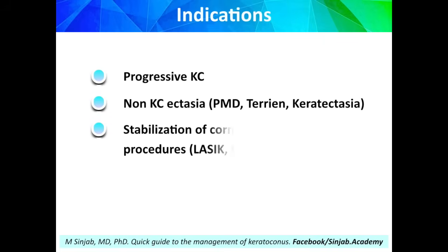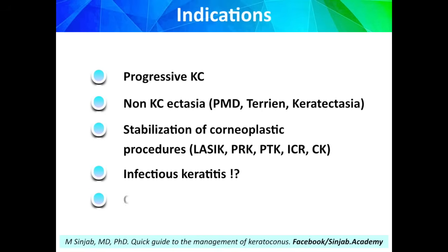Corneal crosslinking is indicated in progressive keratoconus, non-keratoconus ectasia, including pellucid marginal degeneration, Terrien's marginal degeneration, and other types of corneal ectasia. It is also indicated to stabilize corneoplastic procedures like LASIK, PRK, PTK, intracorneal rings, and conductive keratoplasty.